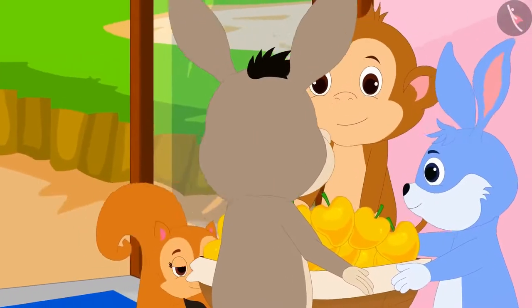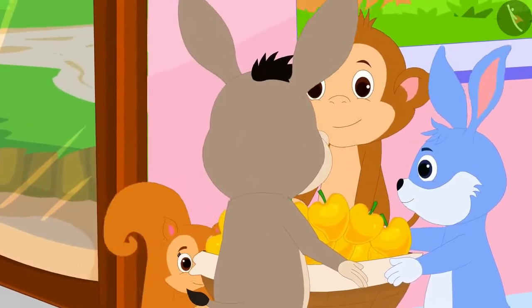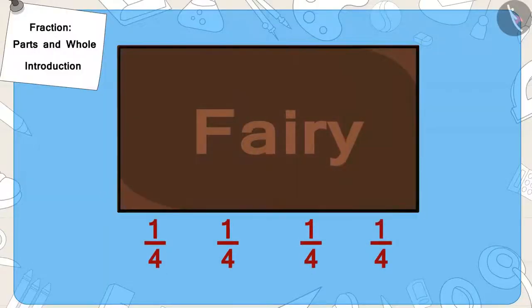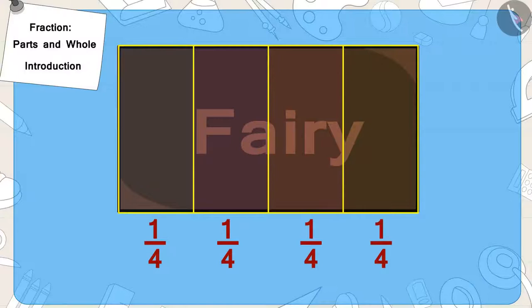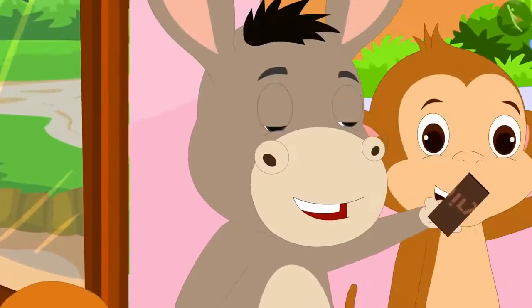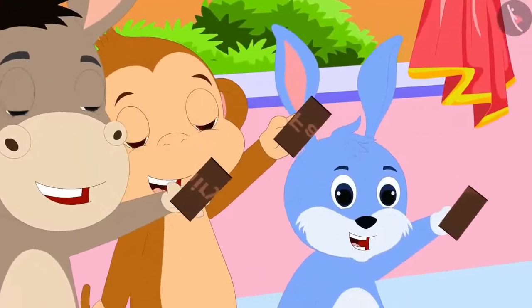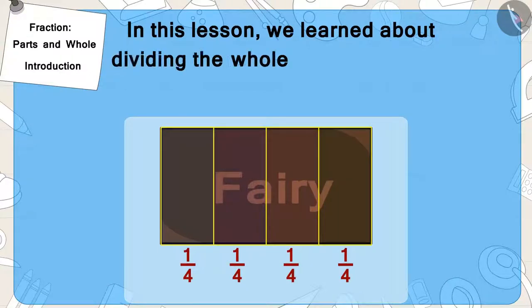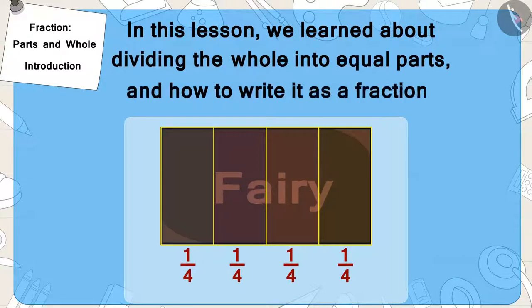Finally, the four of them reached Appu's house with the mango basket. Appu gave Bunny the chocolate. He divided the chocolate into four equal parts and gave each of them one part of it. Children, in this lesson we learned about dividing the whole into equal parts and how to write it as a fraction.